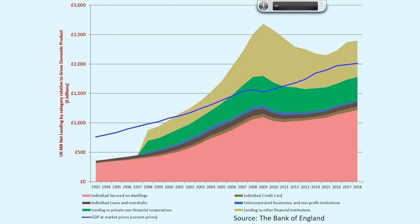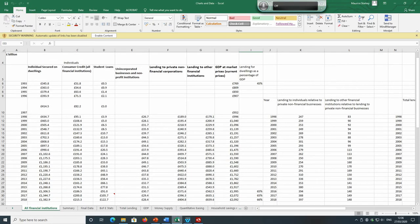This chart shows lending for property purchase in the pink area in relation to GDP shown by the blue line. Lending on property has not only become the main form of lending by UK financial institutions, but has also increased substantially over the period 1993 to 2018. In 1993, lending for property was only £346 billion, whereas by 2018 it had increased to almost £1.4 trillion — an increase of £1 trillion.